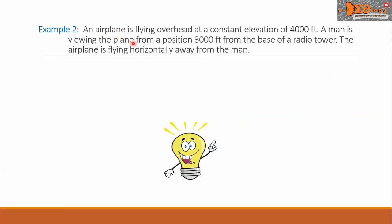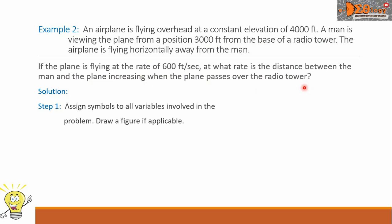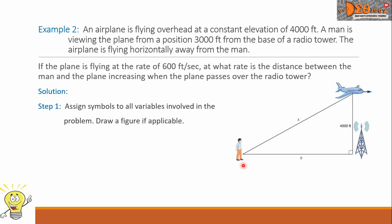Example 2. An airplane is flying overhead at a constant elevation of 4,000 feet. A man is viewing the plane from a position 3,000 feet from the base of a radio tower. The airplane is flying horizontally away from the man. If the plane is flying at the rate of 600 feet per second, at what rate is the distance between the man and the plane increasing when the plane passes over the radio tower? For our solution, Step 1 says: assign symbols to all variables involved in the problem and draw a figure if applicable. This is our figure.